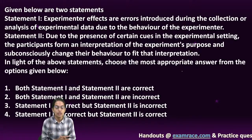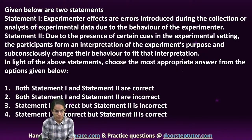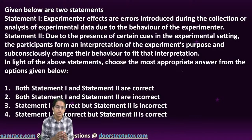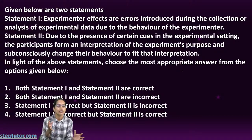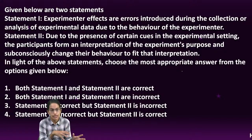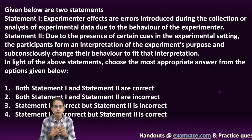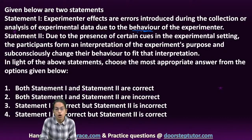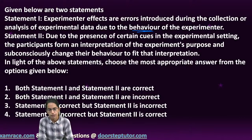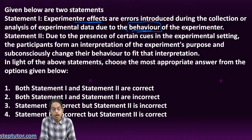This question focuses on a research problem: what is experimenter effect? There are two statements. The first is that experimenter effects are errors due to the collection and analysis of data caused by the behavior of the experimenter. For example, if I am conducting an experiment, the errors I can create because of my own behavior would be considered the experimental effect. This is a correct statement.